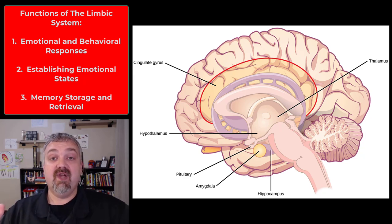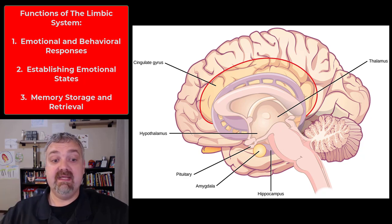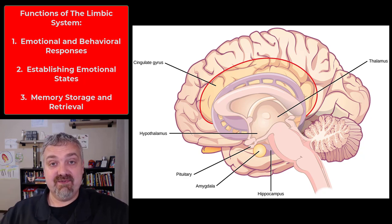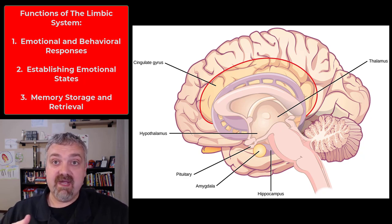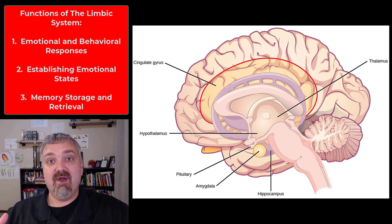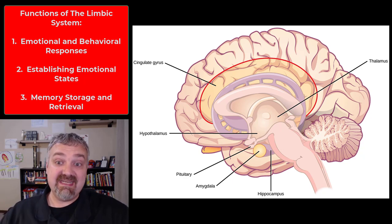Another major function we'll talk about with the hippocampus is that the limbic system plays a big role in memory — in memory storage and retrieval. This is kind of good news, bad news. You remember things that are really emotionally powerful. You remember things that are really bad, so hopefully you won't do them again in the future or put yourself in that situation. But it also gives a lot of extra strength to our fear-based memories. Bad memories stick with us in a way that other memories don't seem to.